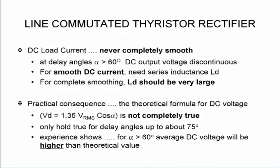Now the DC load current is never completely smooth. At delay angles higher than 60 degrees the DC output voltage becomes discontinuous. So for a smooth DC current what we need is a series inductance, and for complete smoothing that should be fairly large.